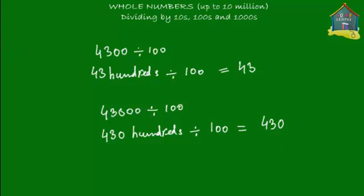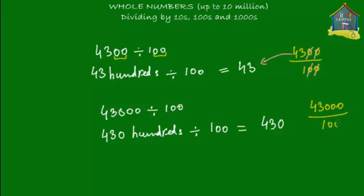If you use the method of cancelling out zeros, you would see that hundreds has two zeros and the given number also has two zeros. So after cancelling out two zeros, you're left with 43. You write 4,300 upon 100, then cancel one zero and another zero — second zeros get cancelled too — and all that's left is 43. For 43,000 divided by 100, cancel two zeros from each: one zero, two zeros cancelled against one zero, two zeros — and all that's left is 430. That's dividing by hundreds.